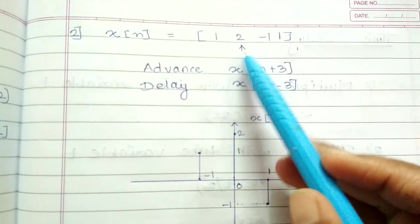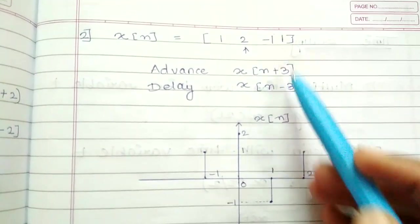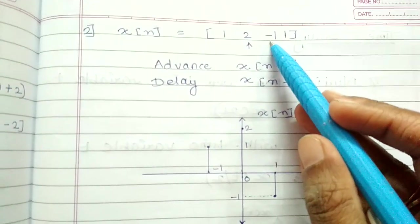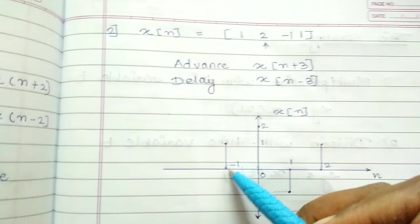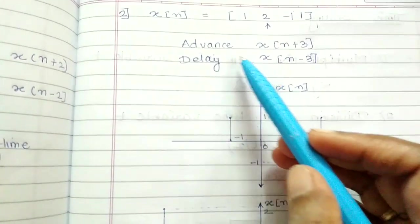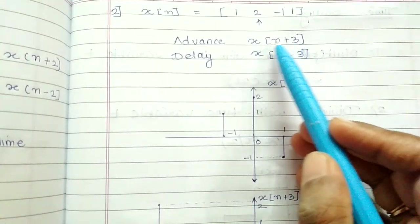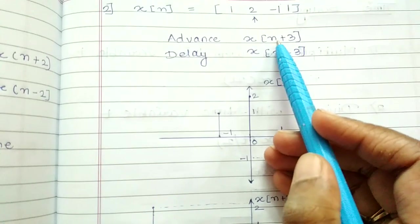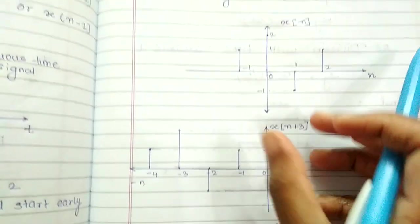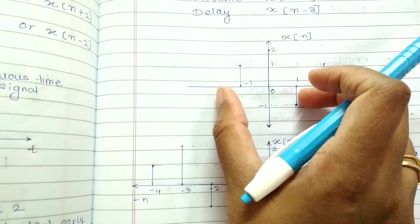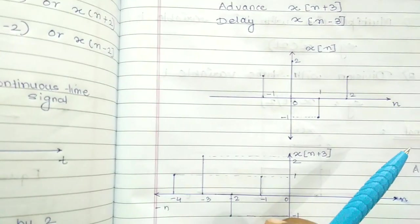This is a discrete signal. An arrow indicates the origin. At the origin, the amplitude is 2. At minus one, the amplitude is +1. At one, the amplitude is −1. At two, the amplitude is +1. So we have drawn the signal. Now the advance version requires us to draw X[n+3]. As discussed, X[n+3] corresponds to a left shift, so you will left shift by three units.